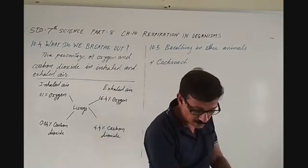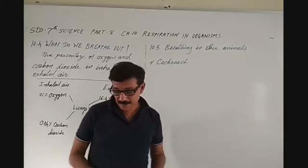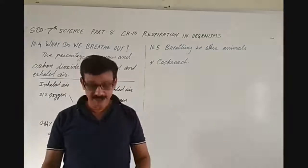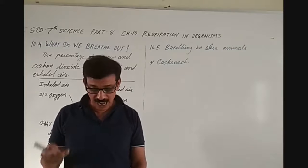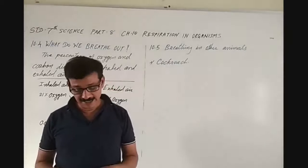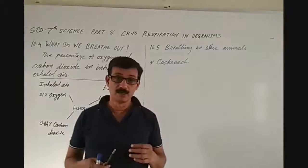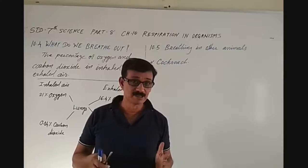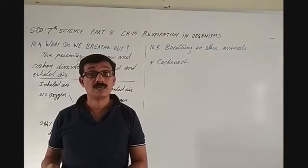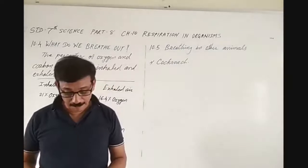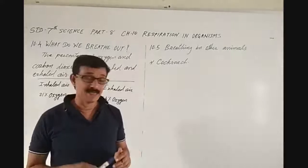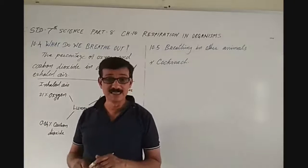Now, let's discuss breathing in other animals. Animals such as elephants, lions, cows, goats, frogs, lizards, snakes, and birds have lungs in their chest cavities, like human beings. So those animals have lungs in their chest cavities similar to humans.